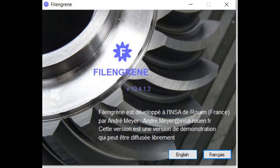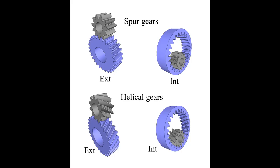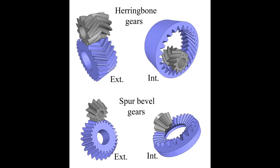The following gears can be designed by the software: spur cylindrical gears external and internal, helical gears external and internal, herringbone gears external and internal, spur bevel gears external and internal.